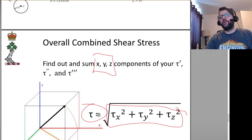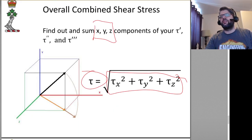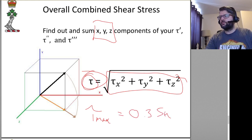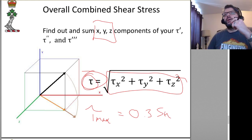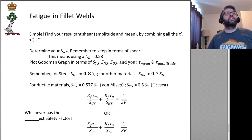A typical failure criterion for fillet welds is that the stress cannot be higher than 0.3 SU. That would be for a static load. We are still worried about fatigue.